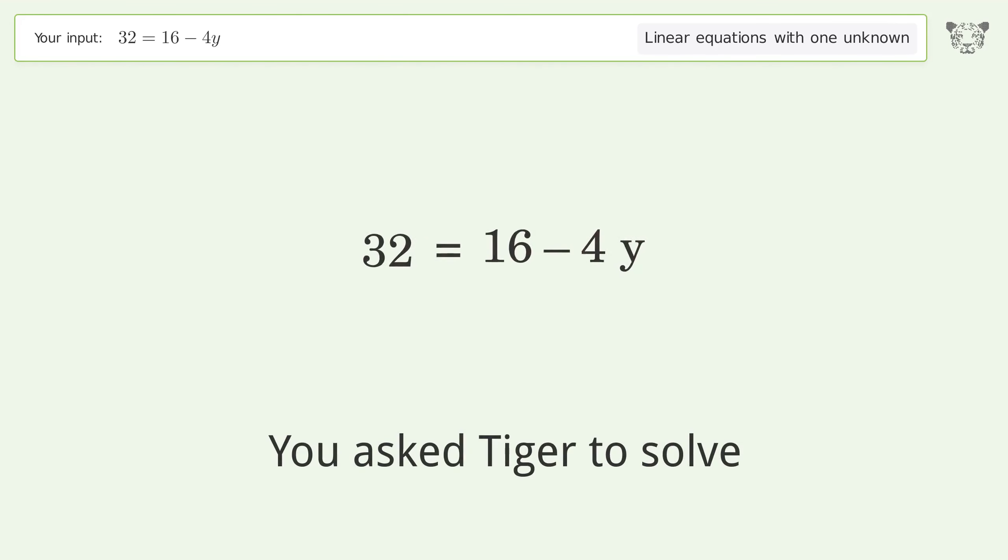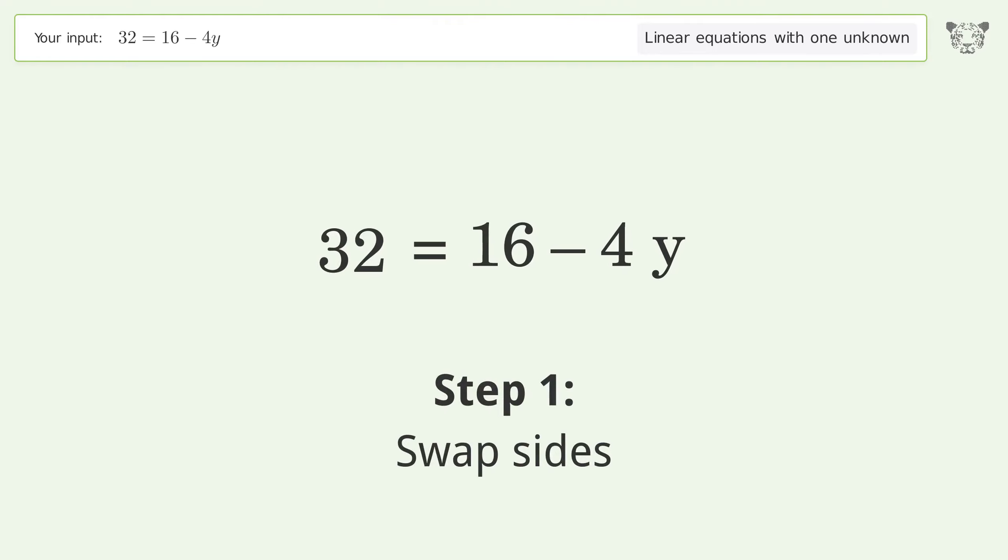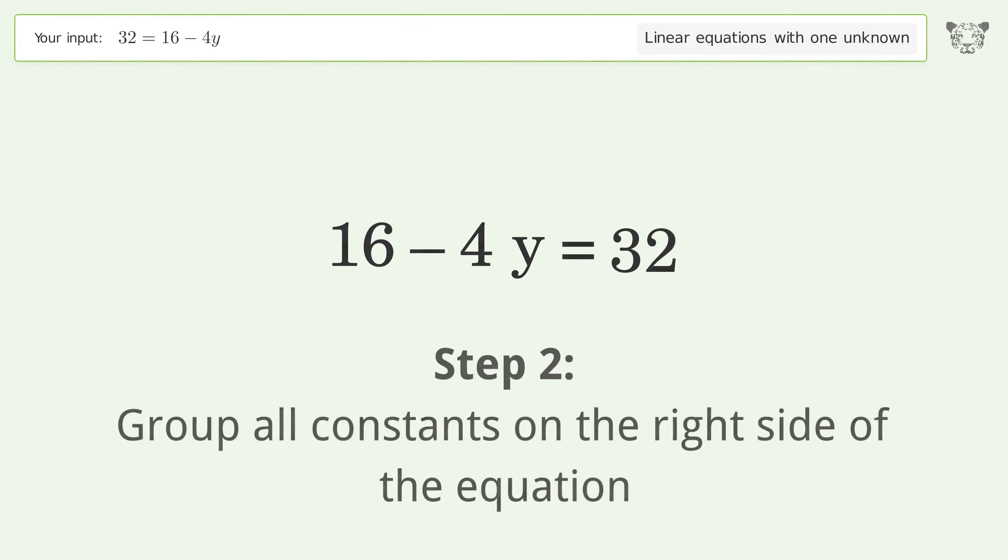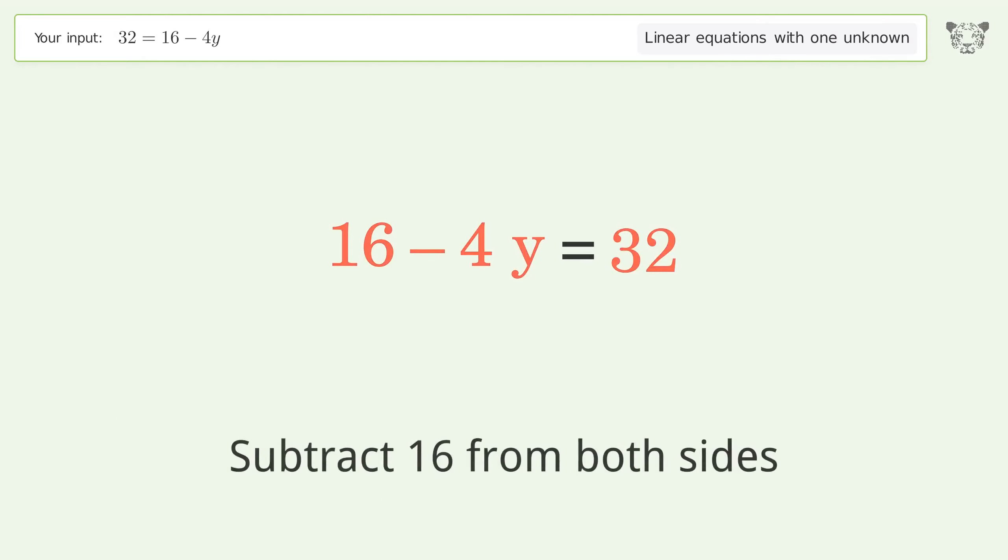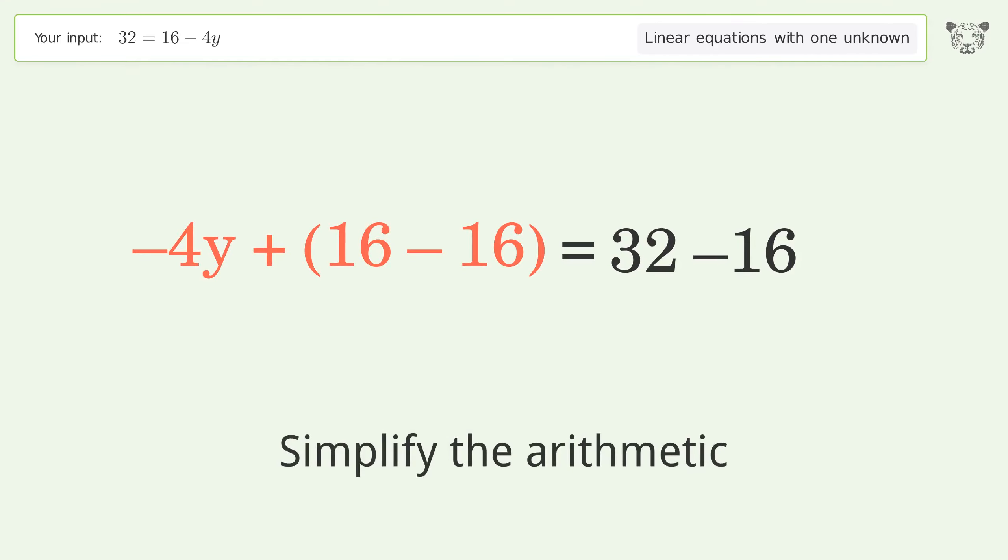You asked Tiger to solve this linear equation with one unknown. The final result is y equals negative 4. Let's solve it step by step. Swap sides, group all constants on the right side of the equation. Subtract 16 from both sides, group like terms, simplify the arithmetic.